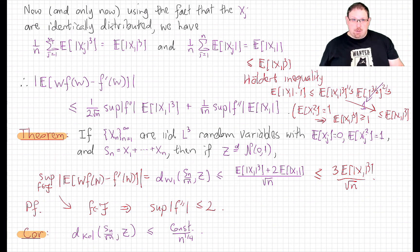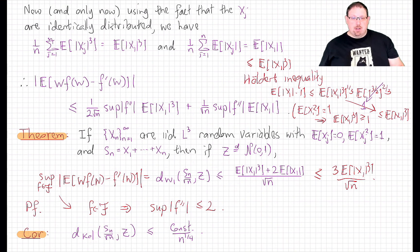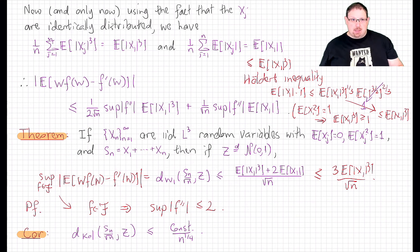We saw in the proof that identical distribution wasn't necessary — just some uniformity in the third moment suffices. But actually, Stein's method is much more powerful than just producing quantitative bounds for the Lyapunov central limit theorem. Next, we're going to see how to use Stein's method to analyze systems with dependencies between many random variables and still obtain Gaussian concentration in the limit.